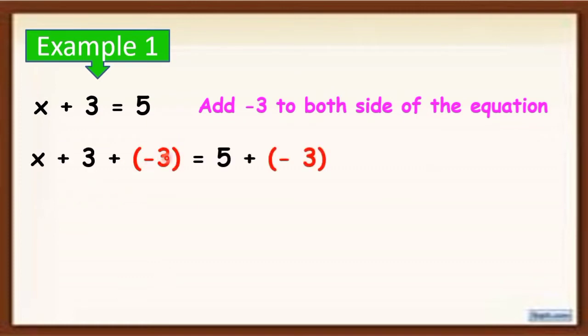Remember, we need to isolate the x, or dapat mawala ng kasama si x. So for us to isolate x, we need to add the reciprocal or opposite of positive 3 to make it 0. That's why we add negative 3 to both sides of the equation.